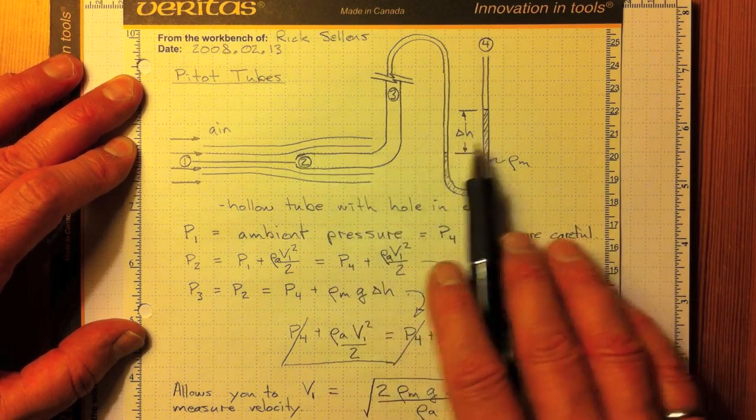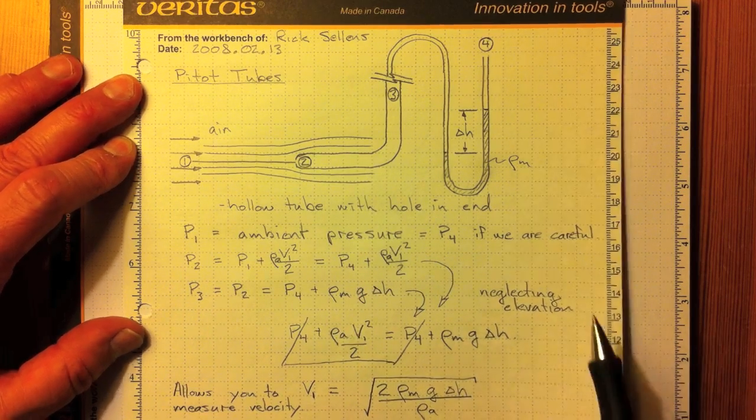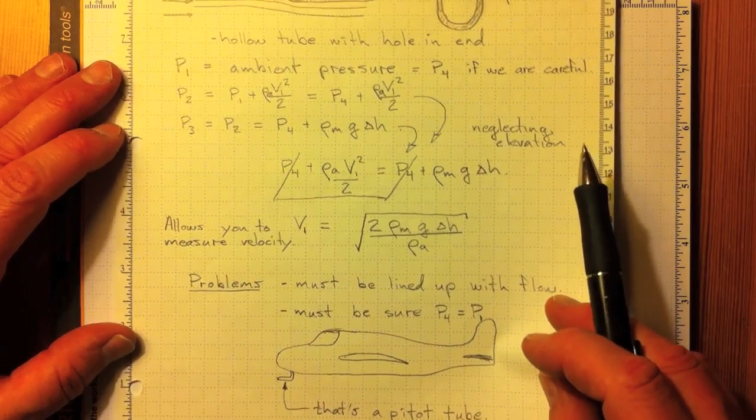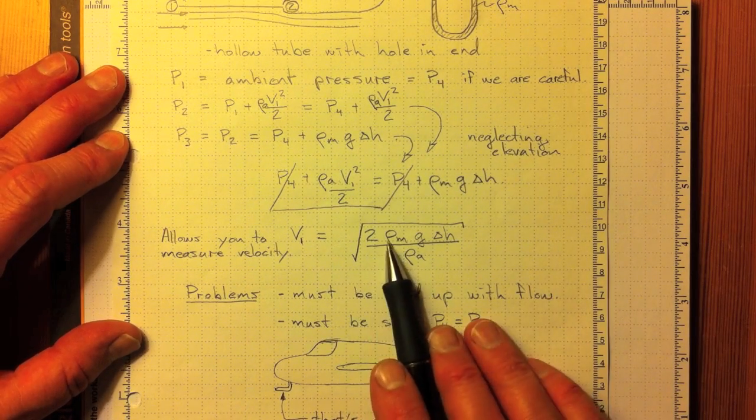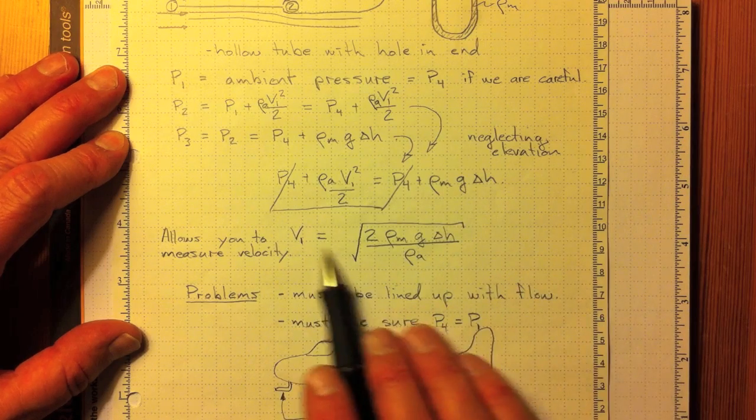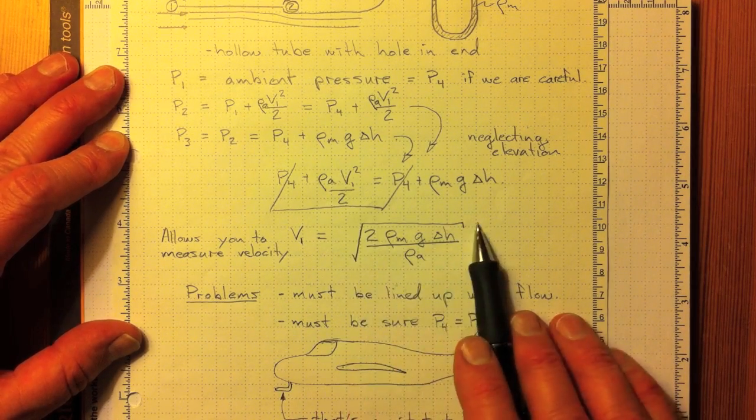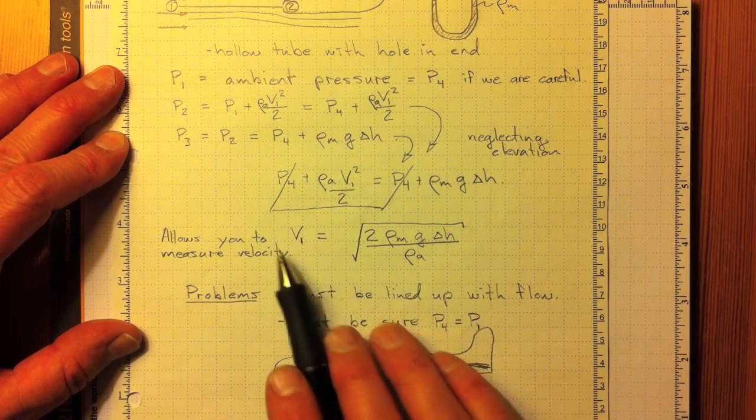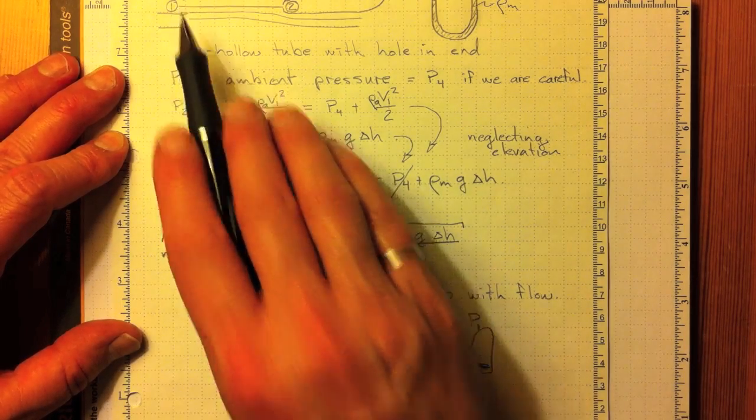will tell us how fast the fluid was going here, simply by applying Bernoulli's equation. And if we rearrange to get the pressure relationship and then reverse it to find out the velocity in terms of the increase in pressure, we get this square root relationship here. So we can, knowing the pressure, figure out what the velocity must have been at location 1.